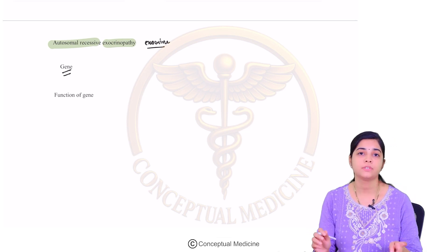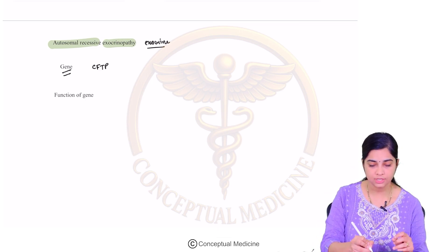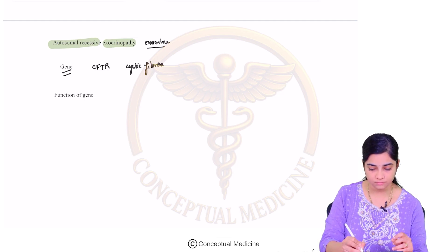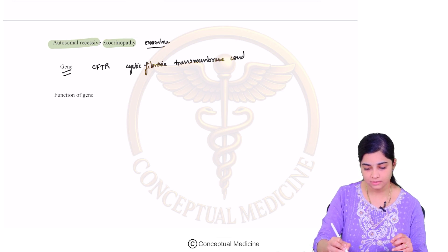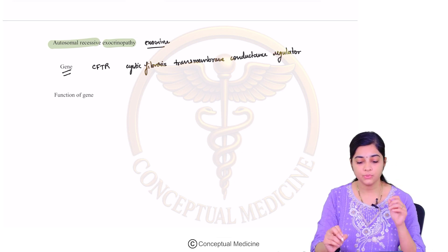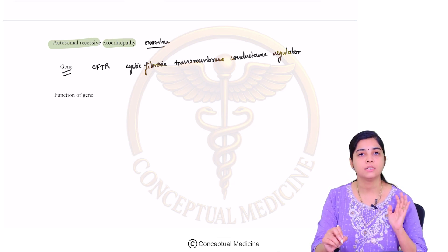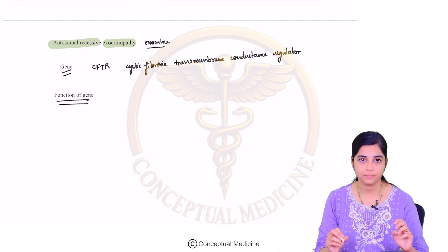So what is the gene that is involved in cystic fibrosis? The gene name is the CFTR gene — cystic fibrosis transmembrane conductance regulator gene. The CFTR gene is the gene that is affected in cystic fibrosis. So what is the function of this gene?